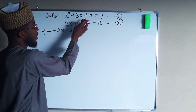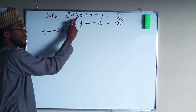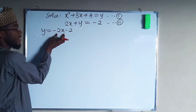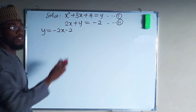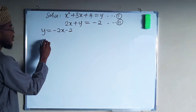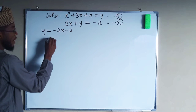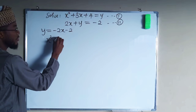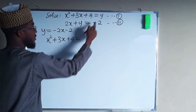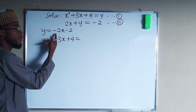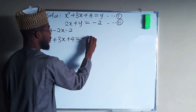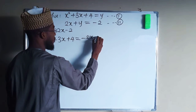Looking at equation one, it says x squared plus 3x plus 4 equals y. We can replace y with negative 2x minus 2, which is the value of y we found. So we end up with x squared plus 3x plus 4 equals negative 2x minus 2.